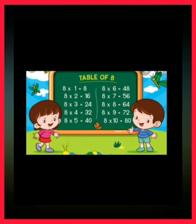So table of 8. 8 ones are 8. 8 twos are 16. 8 threes are 24. 8 fours are 32. 8 fives are 40.